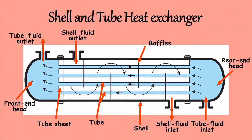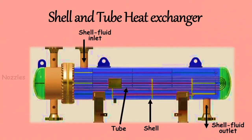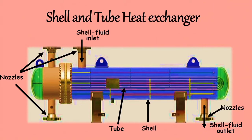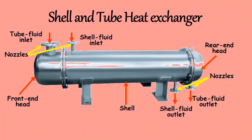The next part of the shell and tube heat exchanger is Nozzles. The entrance and exit ports for the shell and tube fluids are called nozzles. These are pipes of constant cross section, welded to the shell and channels. They are used to distribute or collect the fluid uniformly on the shell and tube sides.